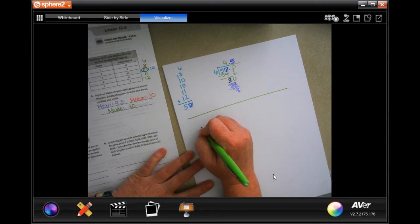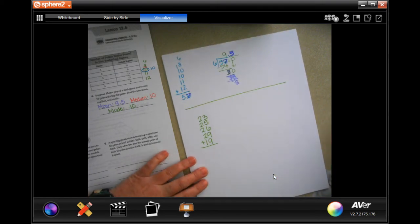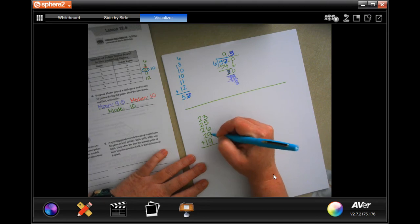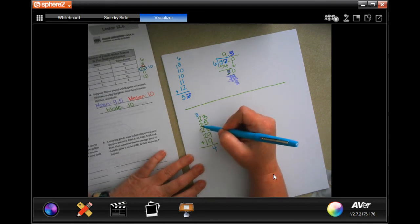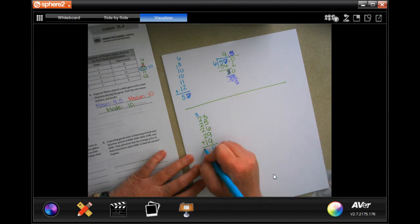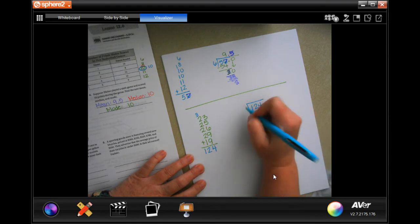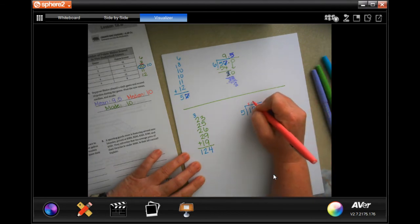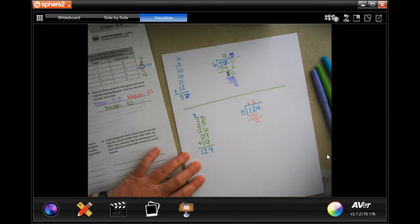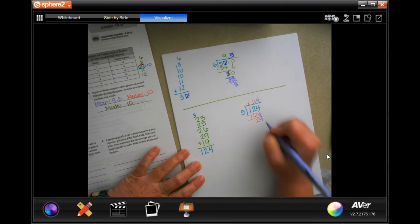So we have 23, 25, 26, 29, and 19. We're going to add those up. So 8 plus 6 is 14, plus 9 is 25, plus 9 more is 34. Carry 3. 3 plus 2 is 5, plus 2 is 7, plus 2 is 9, plus 2 is 11, plus 1 is 12. So now I have 124 inside the box. And I got 1, 2, 3, 4, 5 numbers. So 5 is not going to go into 1. It'll go into 12, 2 times. 2 times 5 is 10. Subtract. Get 2.